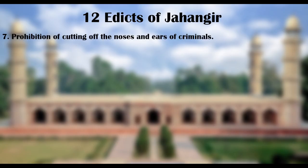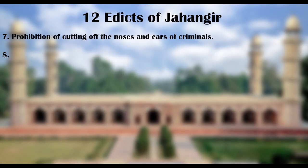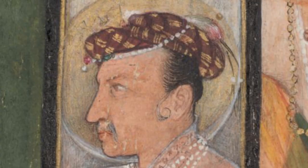7. Prohibition of cutting off the noses and ears of criminals. In his memoir Tuzuk-e-Jahangiri, the emperor mentioned that he forbade the cutting off of the noses or ears of any person and himself made a vow by the throne of God that he would not blemish anyone by punishment. 8. Prohibition of taking property of another without his consent. In his eighth edict, Jahangir gave an order that the officials of the crown lands and the Jagirdars should not forcefully take the farmers' lands and cultivate them on their own account.